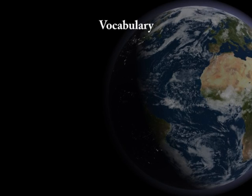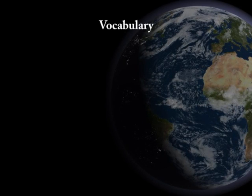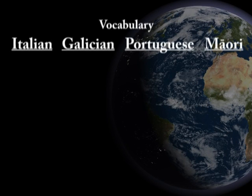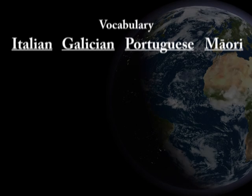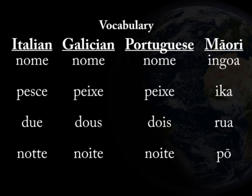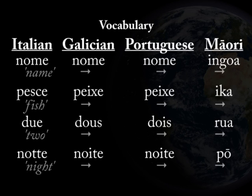These languages are Italian, Galician, Portuguese, and Maori. These words are actually fairly representative of the relationships between these languages. Take a moment to consider which languages share a common ancestry and how closely these languages must be related.